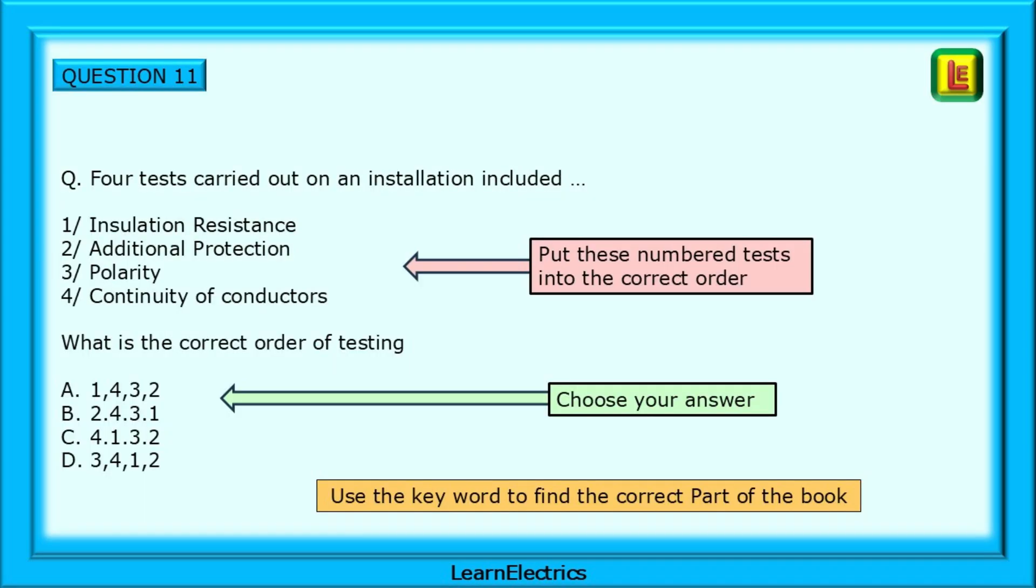Question 11 tells us the four tests that were carried out on an installation included the list numbered 1 to 4. We are asked to put the list in the correct order of testing and select an answer from the choices A, B, C, or D.